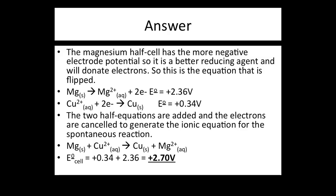The magnesium half cell has the more negative electrode potential, so it is the better reducing agent and will donate electrons — this is the equation that is flipped: Mg(s) → Mg²⁺ + 2e⁻. The sign of the standard electrode potential is also flipped to plus 2.36 volts. Cu²⁺ + 2e⁻ → Cu(s) remains at plus 0.34 volts. Adding the two half equations and cancelling electrons gives: Mg(s) + Cu²⁺ → Cu(s) + Mg²⁺. The standard cell potential is 0.34 + 2.36 = 2.70 volts.